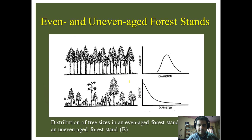To understand the distribution of stems and diameter, we can look at this graph. For an even-aged stand, you can see it follows a bell-shaped curve. Initially, as diameter increases, the number of trees is low, then the density picks up as diameter increases, and after a certain point, the number of stems starts decreasing again.